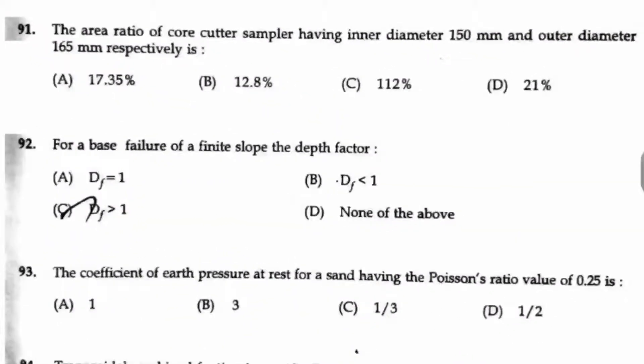Question number 91, the area ratio of core cutter sampler having the inner diameter 150 mm and outer diameter 165 mm respectively is dash.